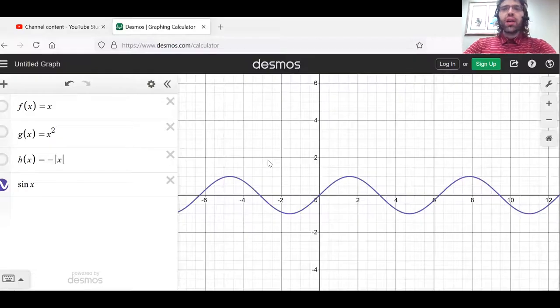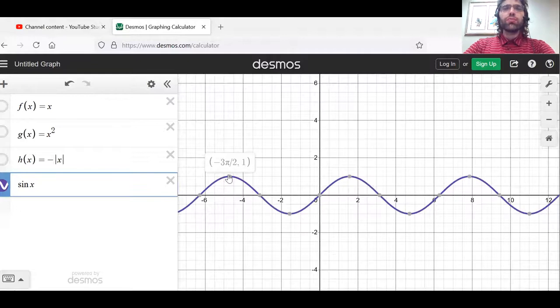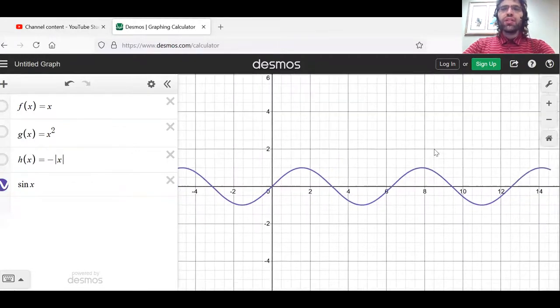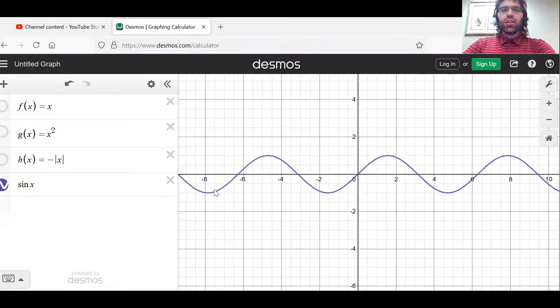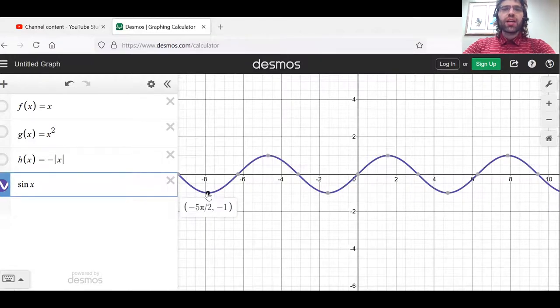The sine achieves its maximum value of one here, and here, and here, in fact infinitely often. And all of these infinitely many points where the sine is equal to one, they're all absolute maxima. And similarly, the minimum value the sine takes on is negative one. It takes on that value infinitely often, and every one of those is an absolute minimum.